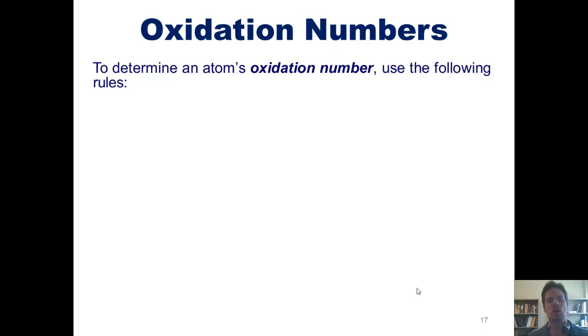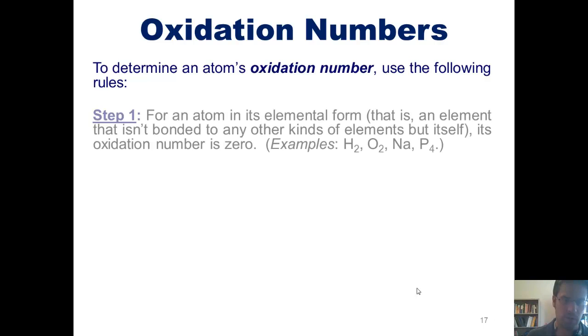To determine an atom's oxidation number or oxidation state, we have to use the following rules. Step one: for an atom that's found in its elemental form, which is any element that isn't bonded to any other kinds of elements but itself, its oxidation number is always zero.